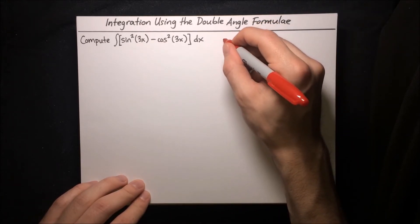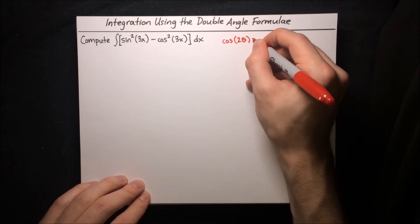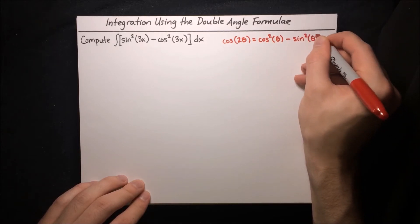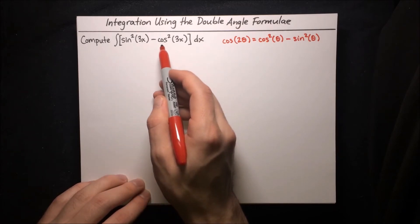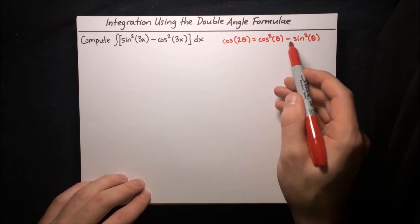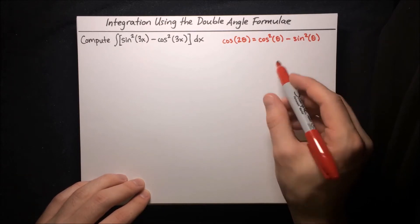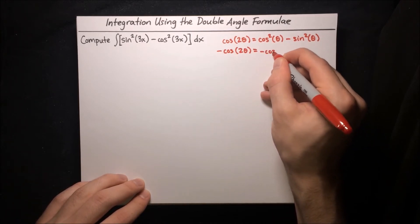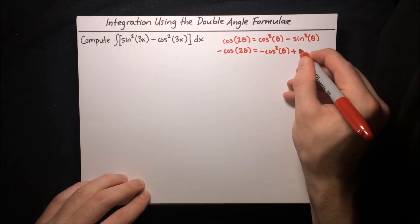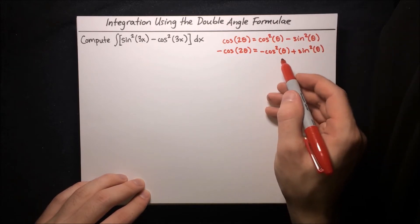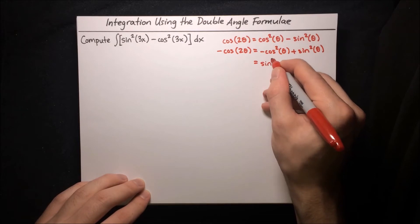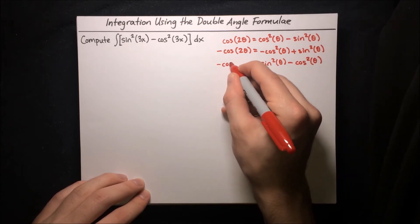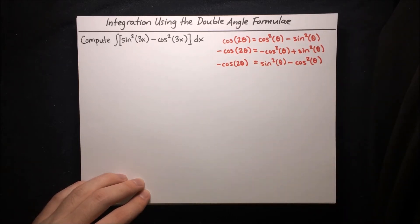The double angle formula for cosine is: cosine of 2θ equals cosine squared of θ minus sine squared of θ. In our integral, we've got sine squared minus cosine squared, whereas the formula has cosine squared minus sine squared. The easy fix is to multiply both sides by negative one: negative cosine of 2θ equals negative cosine squared θ plus sine squared θ, which is the same as sine squared minus cosine squared. So negative cosine of 2θ equals sine squared of θ minus cosine squared of θ.